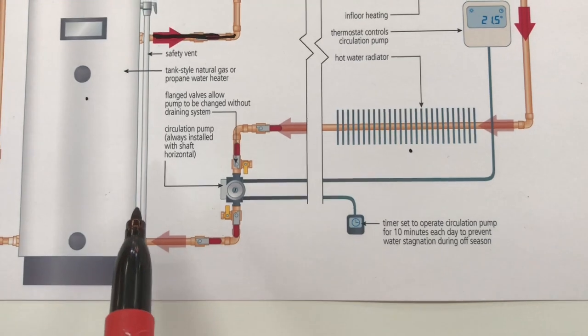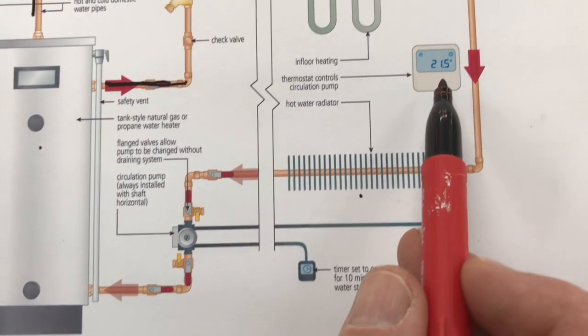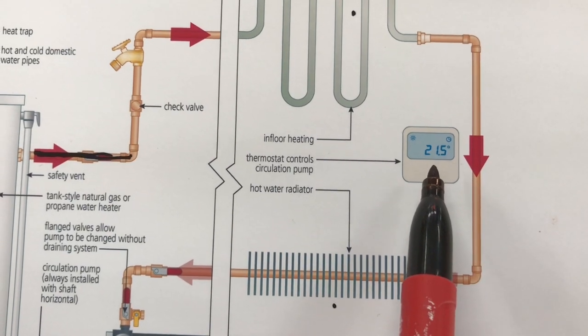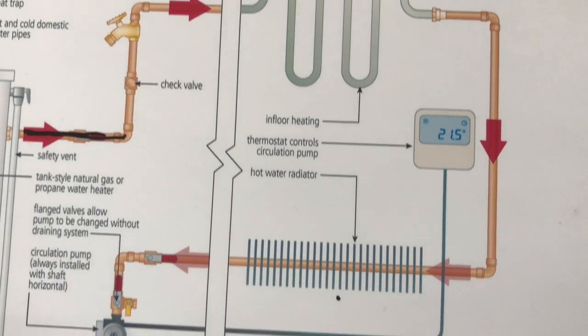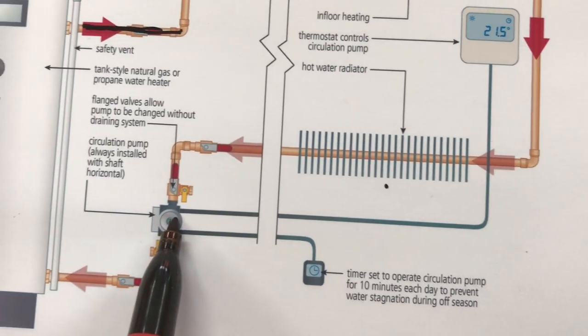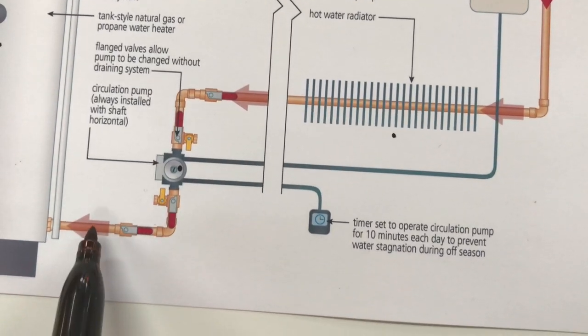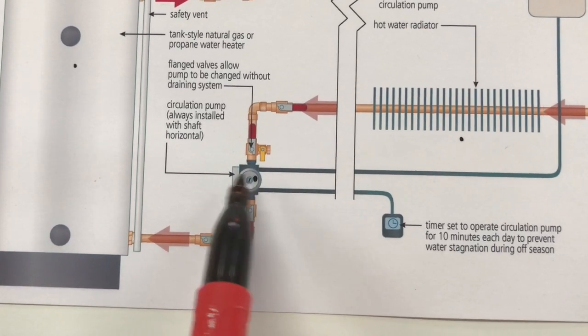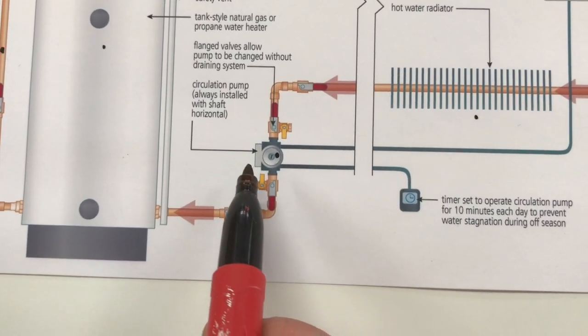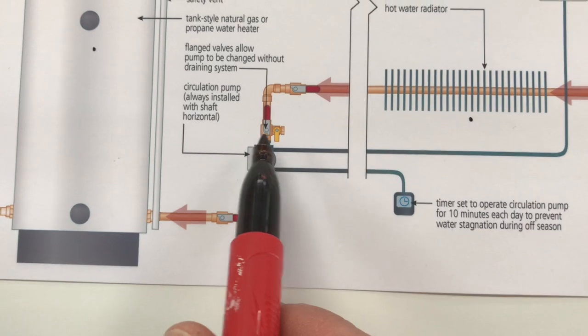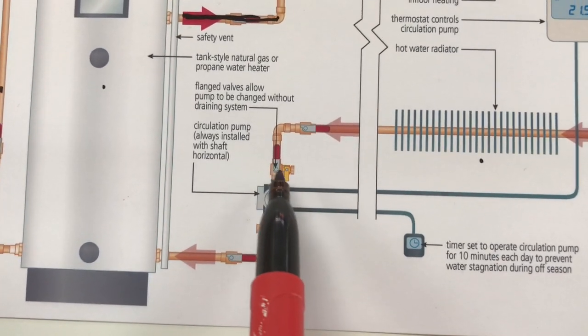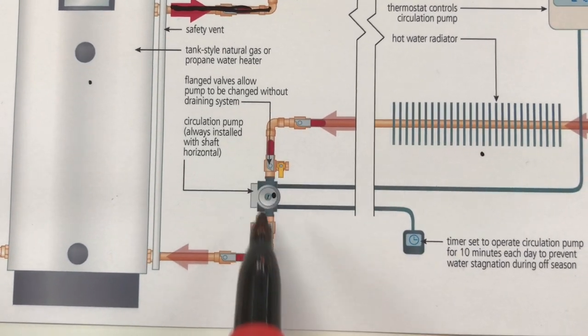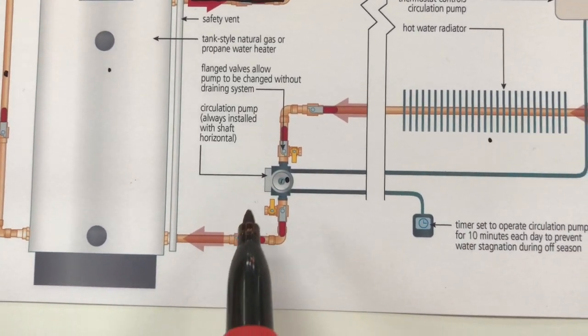Now all of this happens when the thermostat calls for heat. The thermostat detects that the room is too cold and it triggers this circulator pump here which starts the flow of water. You'll notice that the circulator pump is installed in a fairly low part of the system. This saves a lot of trouble because it means you're far less likely to have that pump prevented from working by an airlock.